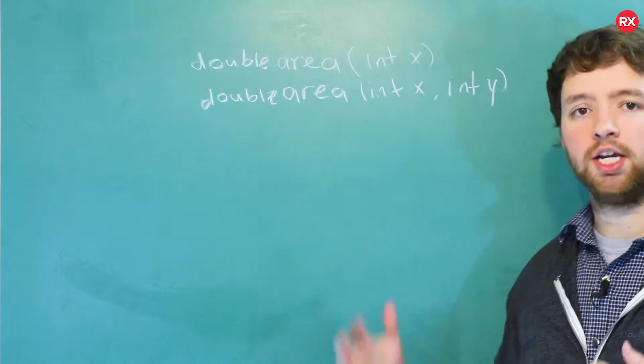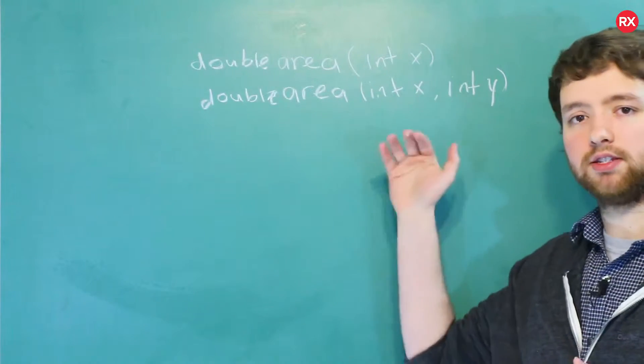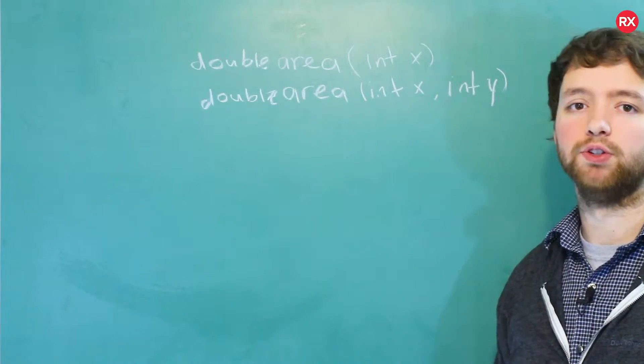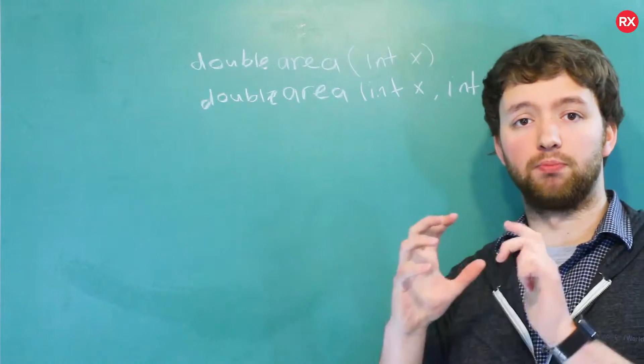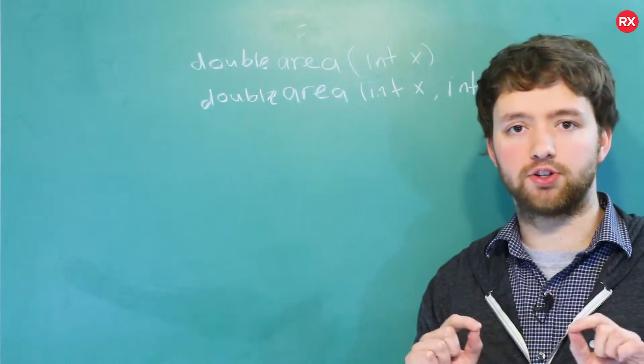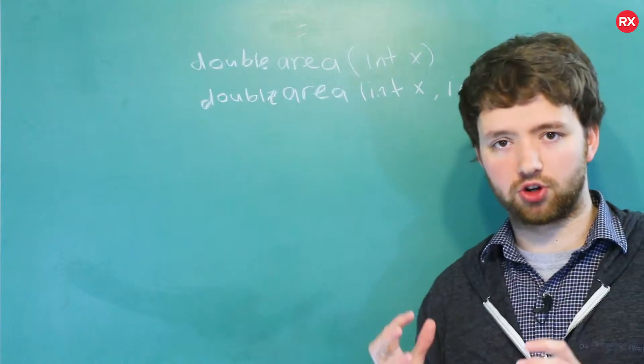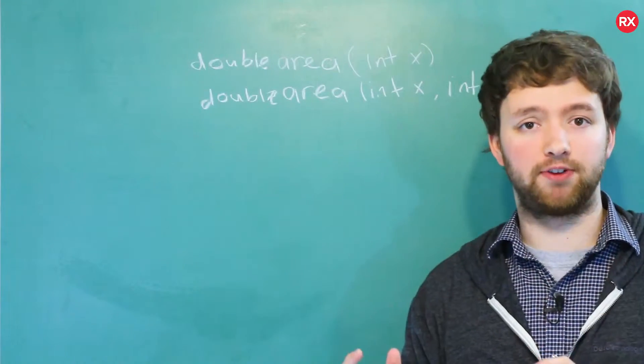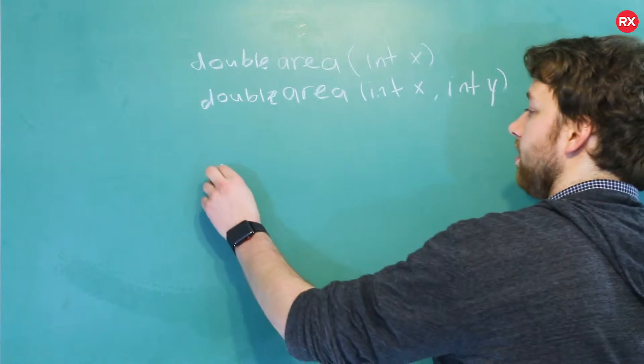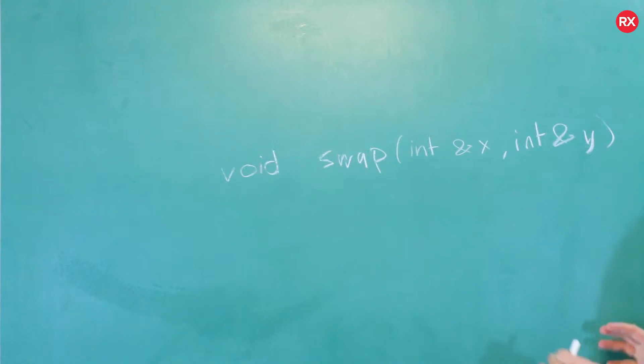So where does templatizing come in? Well, the thing is you might have to make lots and lots of variations of this function using a bunch of different overloads. But the general concept or the purpose of the function is often very similar from different variations. So one really good example of where this might show up is with the swap function. We worked on creating a swap function before and it looks a little something like this, where we take two reference variables.